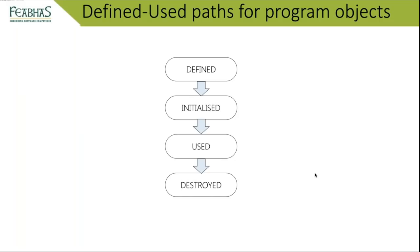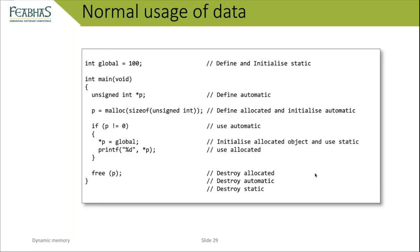For analyzing problems in the runtime system, the term 'DU path' is used — standing for Defined-Used path. This is heavily used by static analysis tools and linters. All program objects must go through this path: defined, initialized, used, and then destroyed. This applies to static, allocated, and automatic objects.